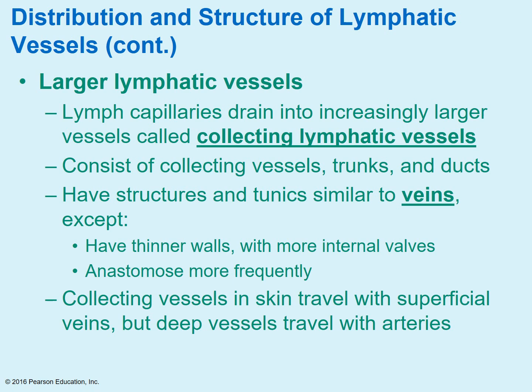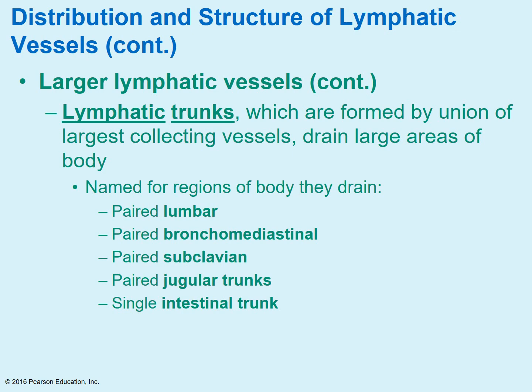The larger lymphatic vessels are what the capillaries drain into, and they are similar to veins in some of their structures — they have thin walls and more internal valves. They collect from the capillaries and tend to travel with the superficial veins, while the deeper vessels tend to travel next to the arteries. Lymphatic trunks are where several collecting vessels drain and emerge together, and they tend to be named for the area of the body they are draining — such as the lumbar, subclavian, and jugular trunks.